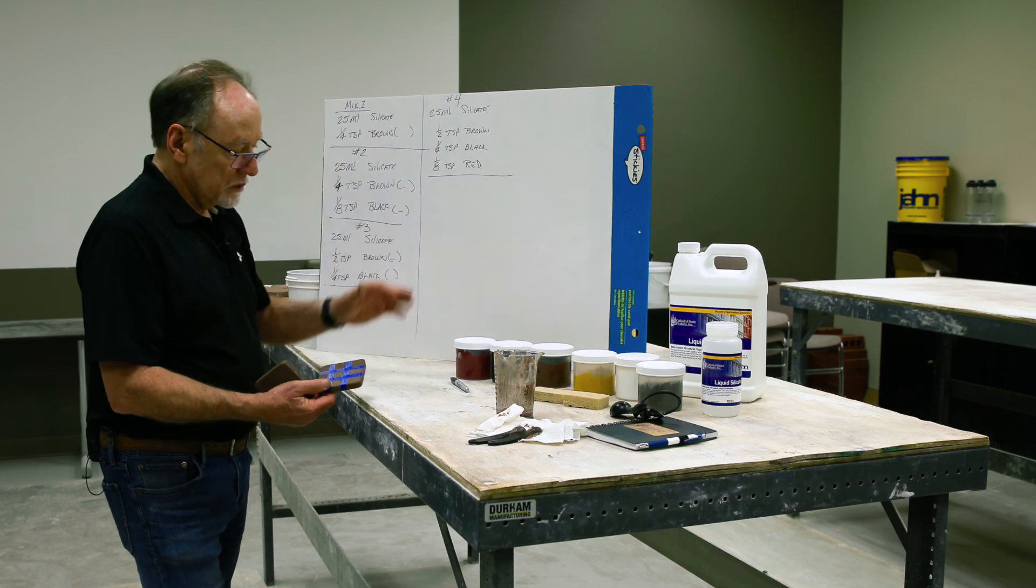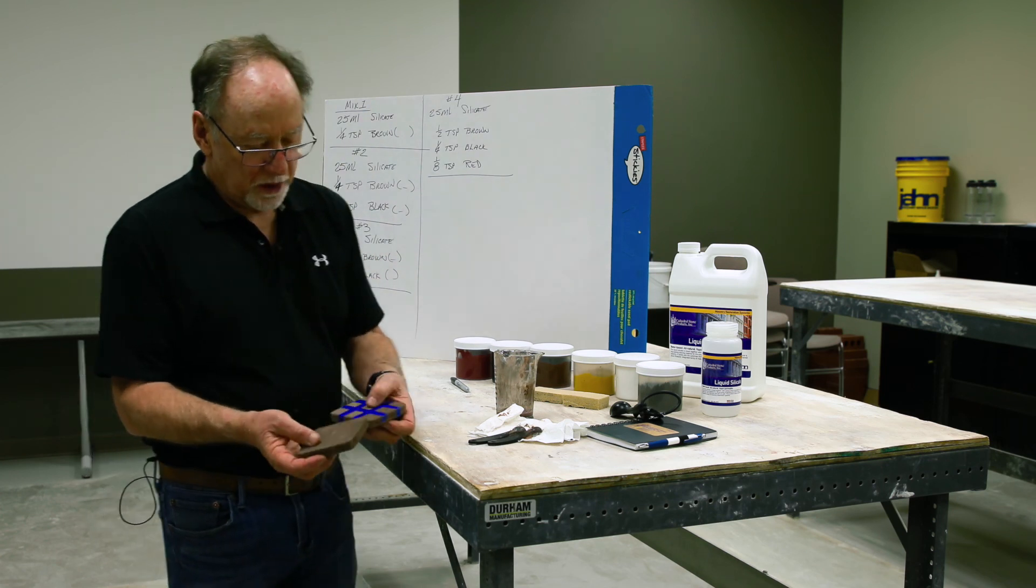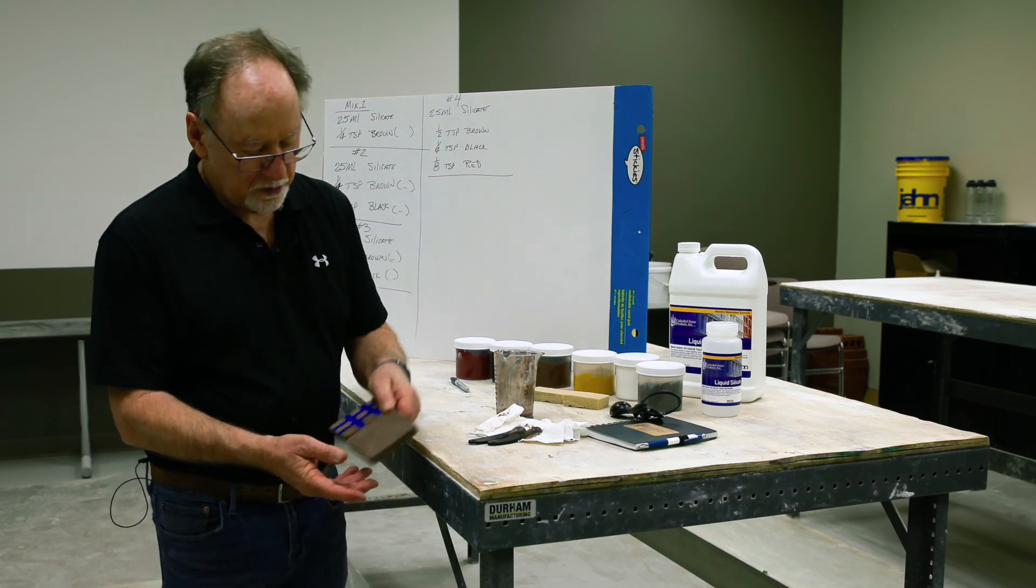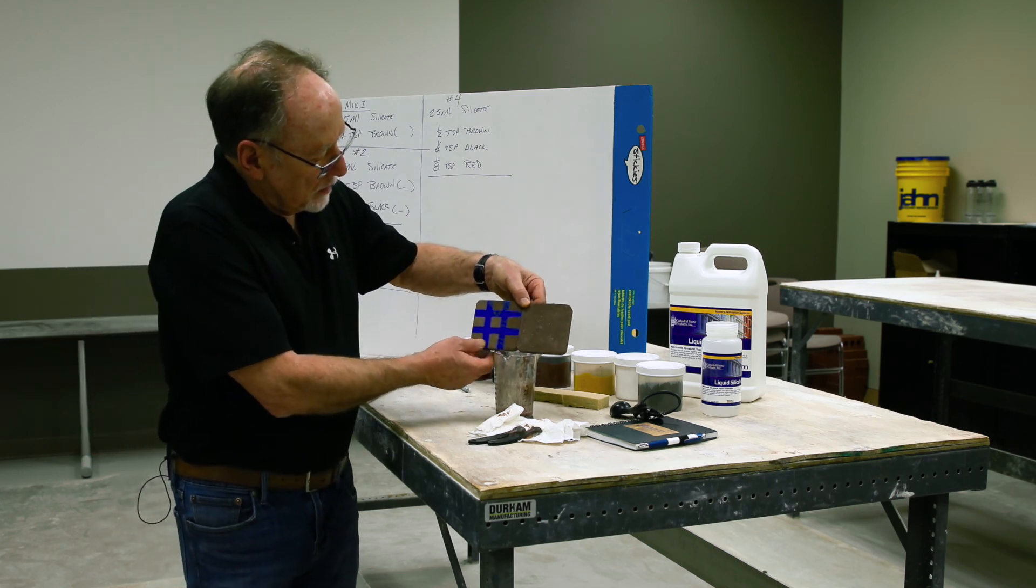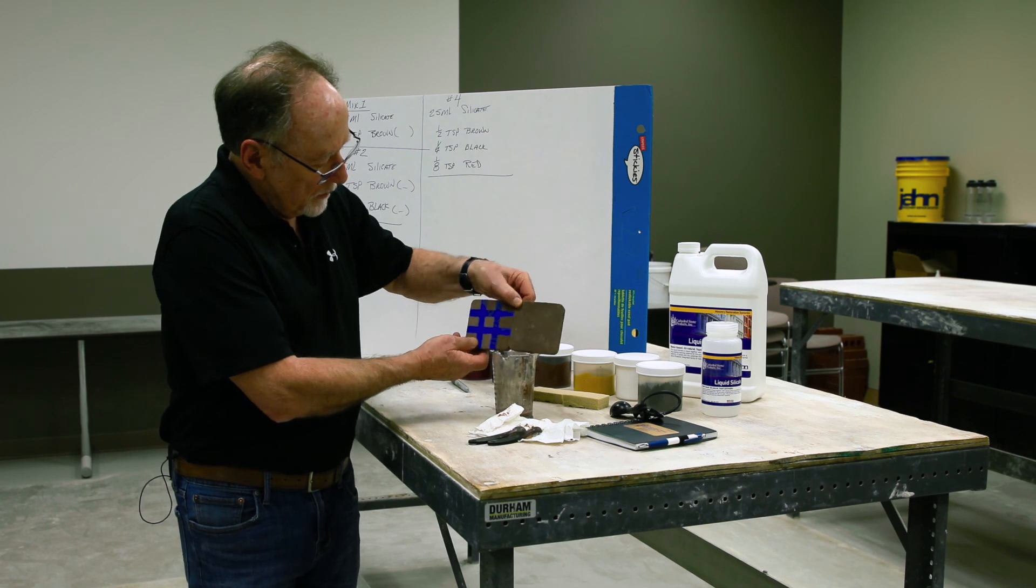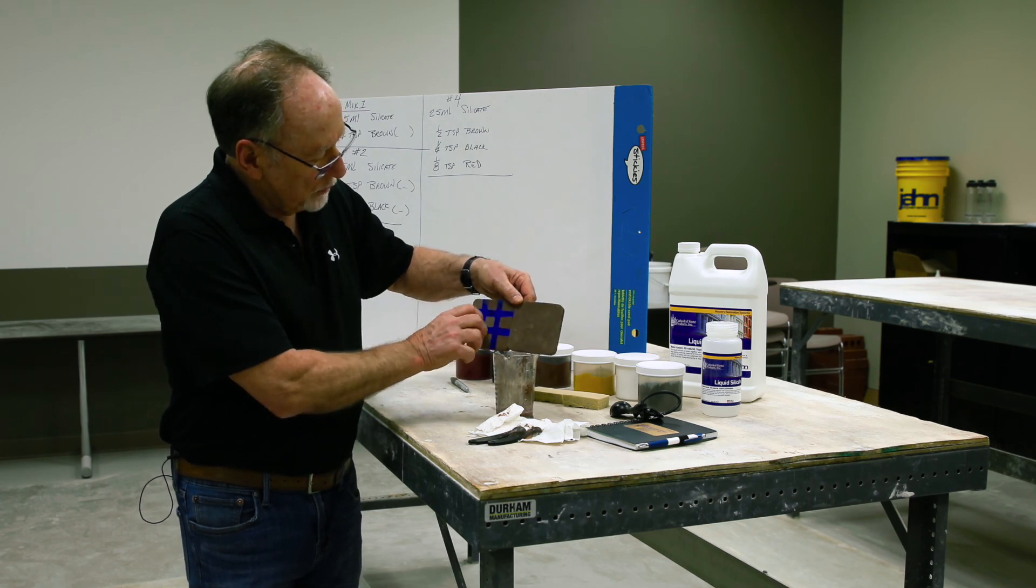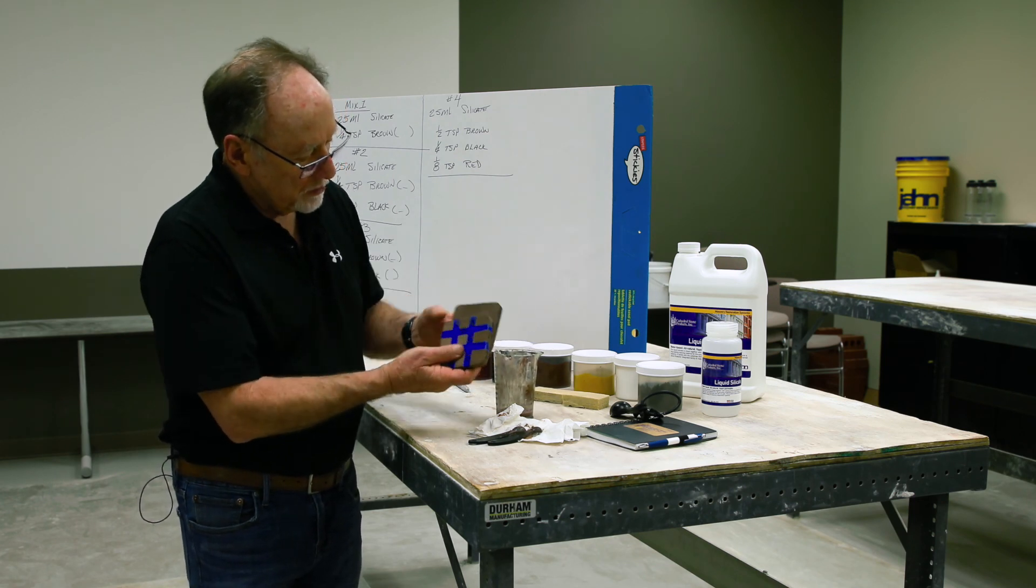You see the difference on the ones that we didn't stain, the ones we started with. Number four is where we added red. The red didn't do anything. Took it too far off. Number one, where we only added brown, is the one that everybody chose. Now we have a record. Now you know.